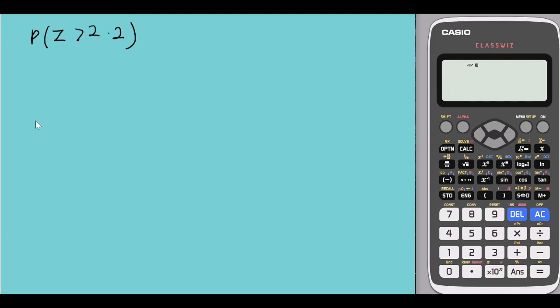So we have a standard normal distribution. The mean would be zero. Let me illustrate this area. This would be 2.2 and the area would be on my right hand side.